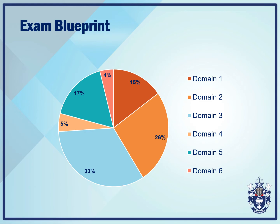Let's take a look at the overall examination blueprints. 15% of the examination questions come from Domain 1, 26% from Domain 2, 33% from Domain 3, 5% from Domain 4, 17% from Domain 5, and lastly 4% from Domain 6. Although the majority of questions come from Domain 3 and Domain 4, you cannot ignore the remaining domains. You need to adequately prepare for all 6 domains of the examination.